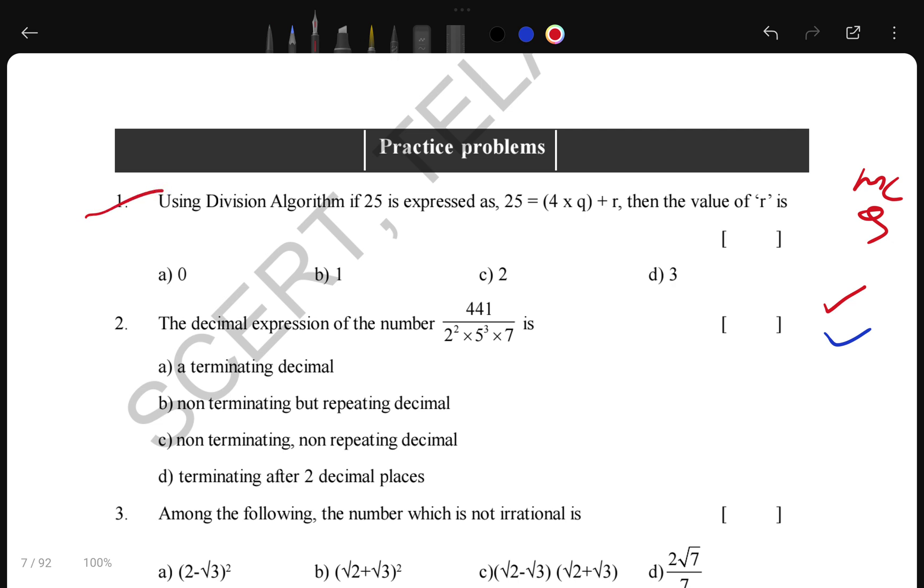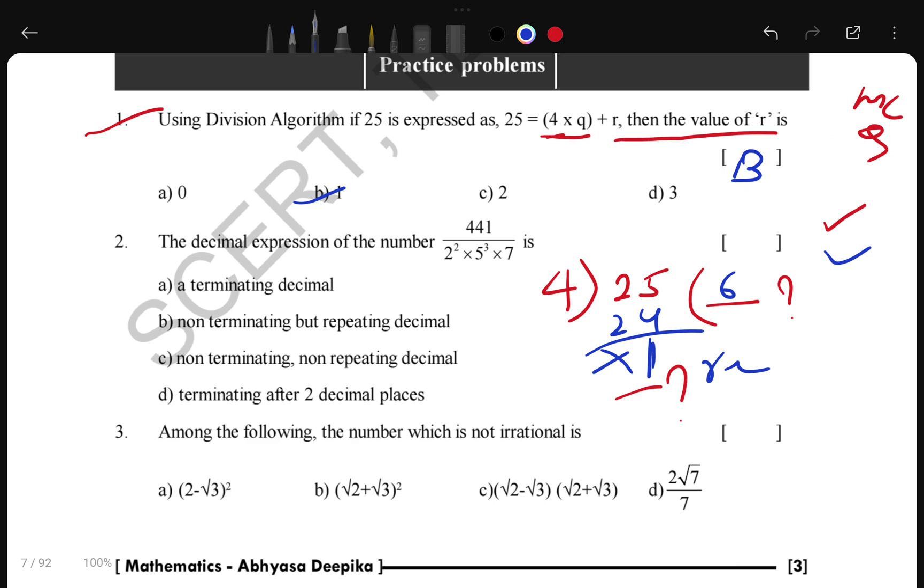The first question is very important. It will come in your MCQ. Definitely this question will come. Here it is given that using division algorithm, if 25 is expressed as 25 = 4x + r, the value of r. R means remainder. If you solve this question, 25 divided by 4. 6 fours are 24, and 1 is left. Then 1 is our remainder. So option B is our answer.